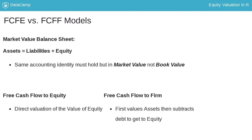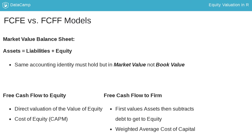There are two key inputs that are different under the two approaches. In the direct approach, we discount cash flows to shareholders at the cost of equity. In the indirect approach, to value the assets, we take the cash flows to the entire firm — including cash flows to both bondholders and shareholders — and discount those at the weighted average cost of capital, which is a blended rate of the cost of equity and the cost of debt. In theory, both approaches should get you to the same value. So we focus on the free cash flow to equity model in this course.